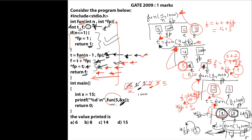The value printed is 8, so option B is correct. This program is very complicated — there are many recursive calls, and in each call you must track which lines are executed. You cannot move to the next statement until the recursive call is completely executed. If it is not clear, please rewind and watch again, or let me know so I can make another video on this question.